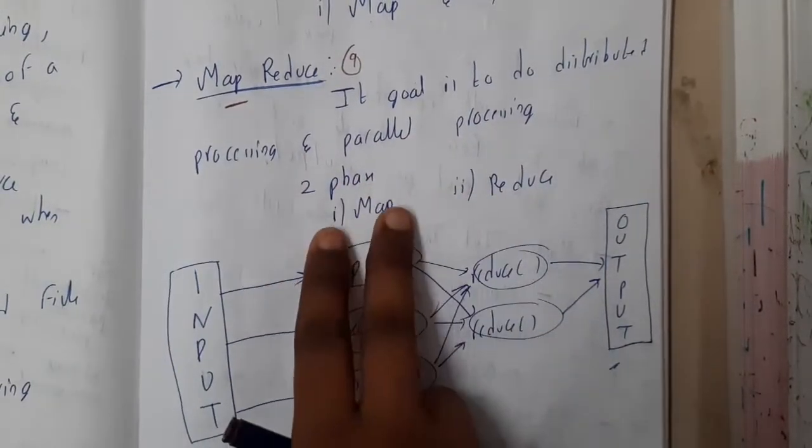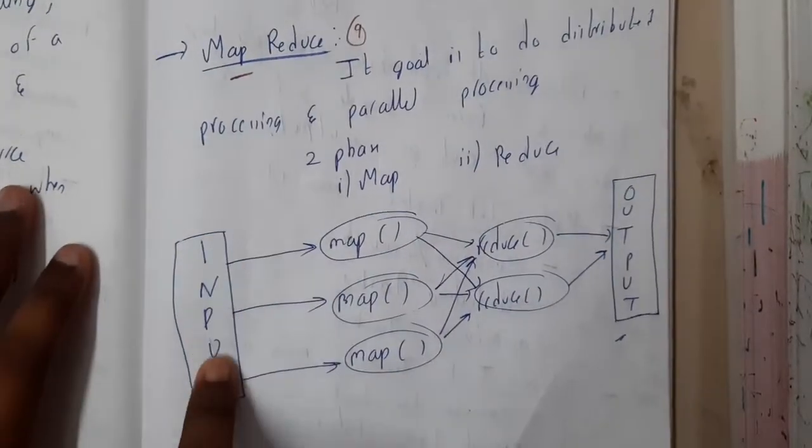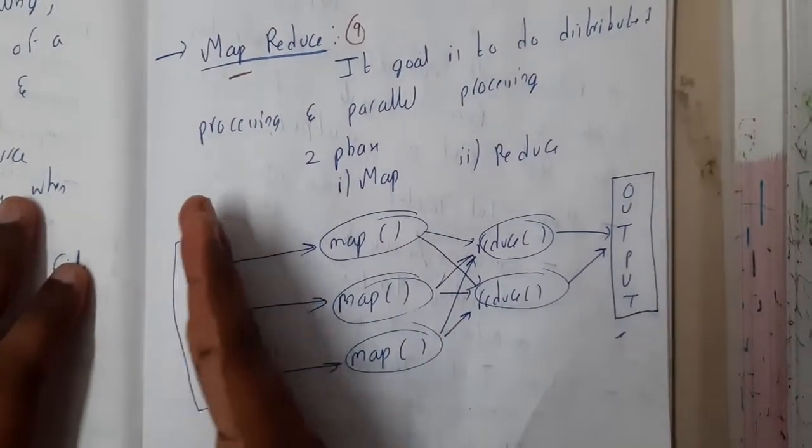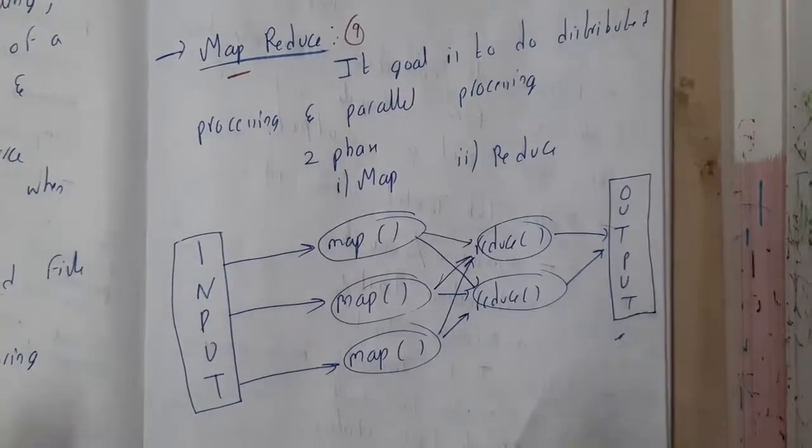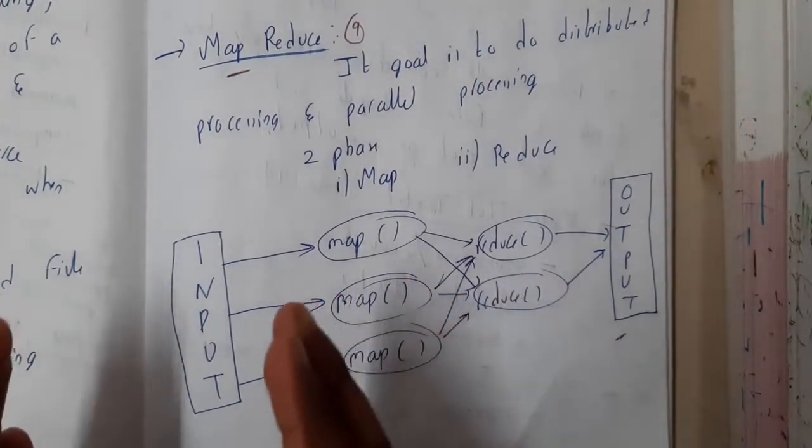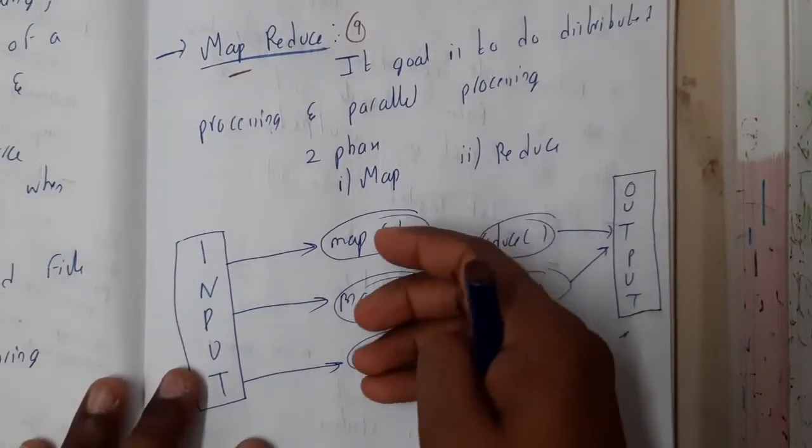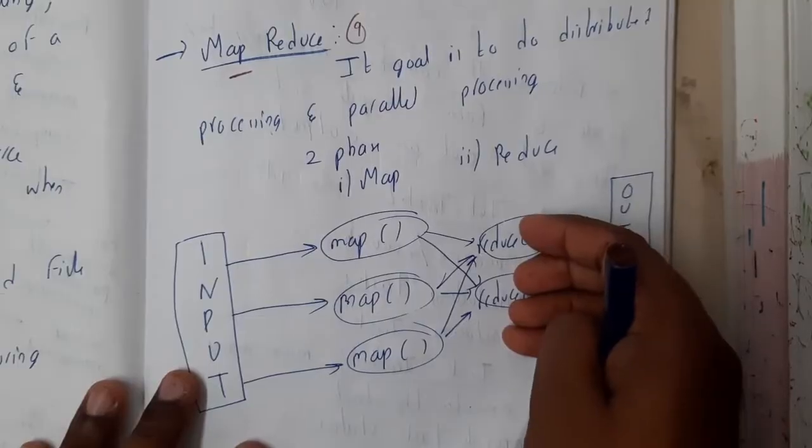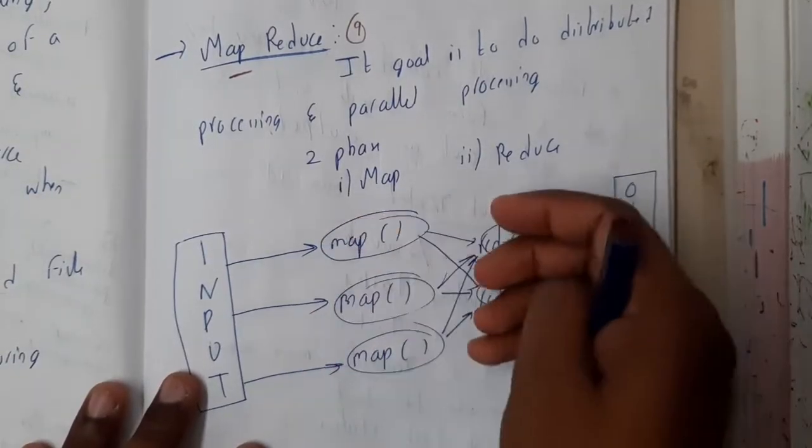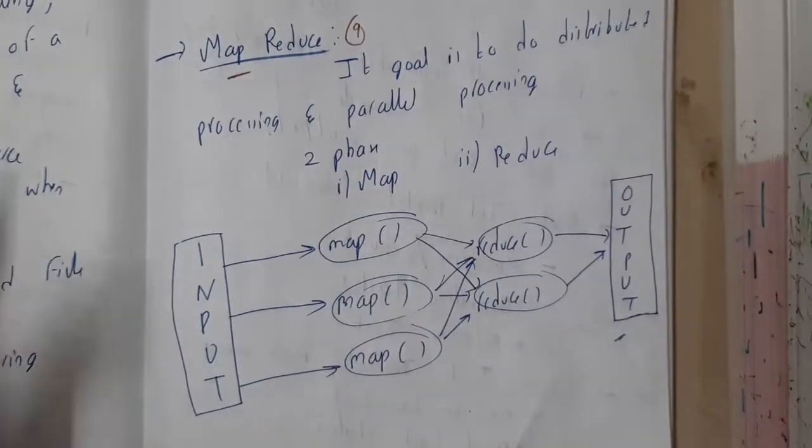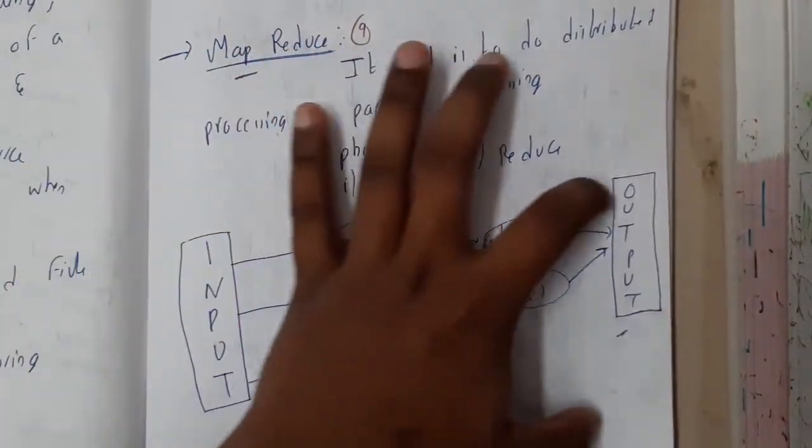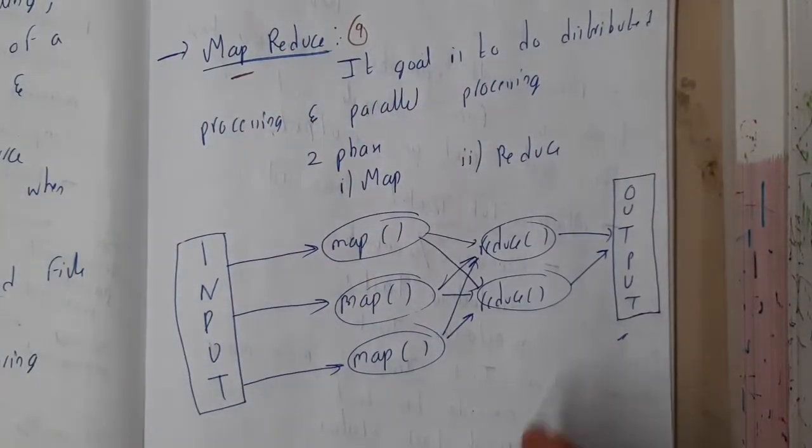It is a two-phase process: map and reduce. We'll be giving the input, and based on the input we'll be mapping them—mapping is nothing but dividing them into different sets. These sets will be reduced, and then you'll get the output. This concept is MapReduce.